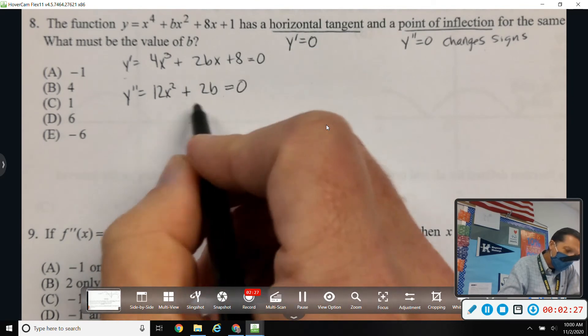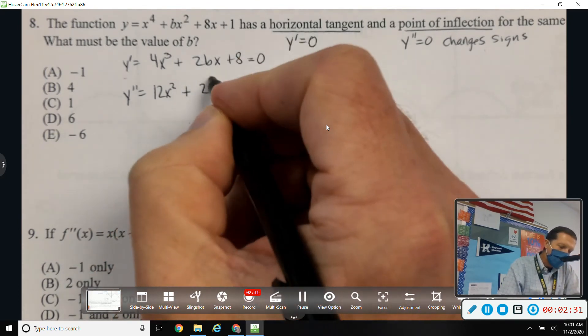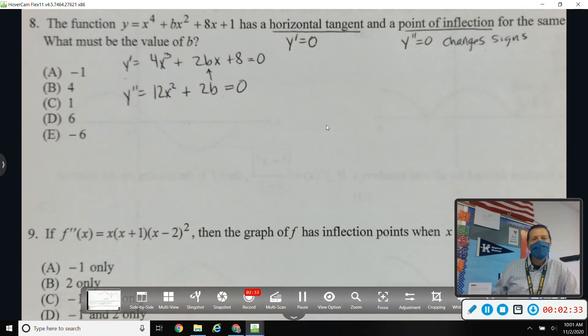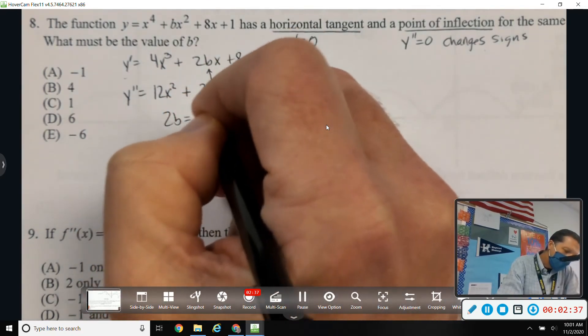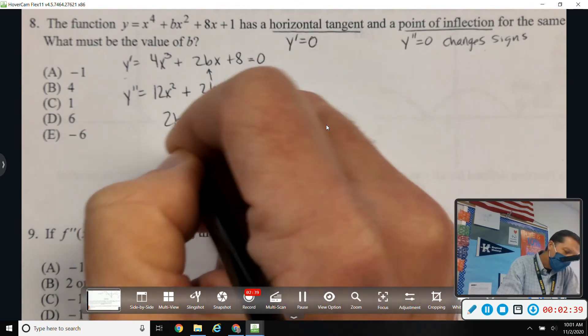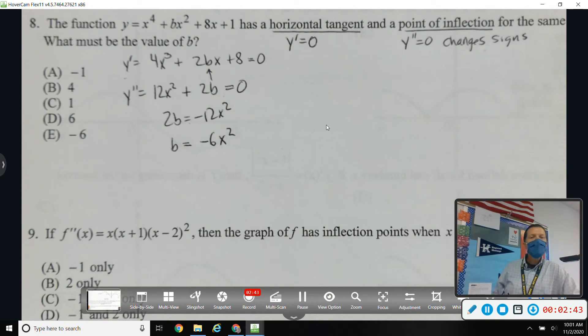So, I think it'll be easier if I solve for b and plug it in to the first one. So, 2b equals negative 12x squared. So, b equals negative 6x squared. I think that's my best bet. If you do it the other way, then you get x as the square root of something, and then it's going to be a big mess.